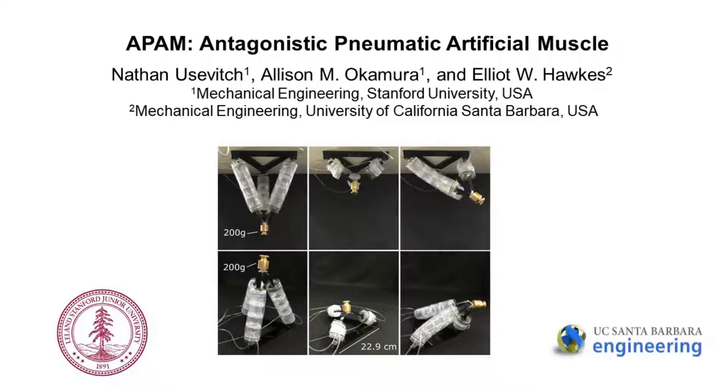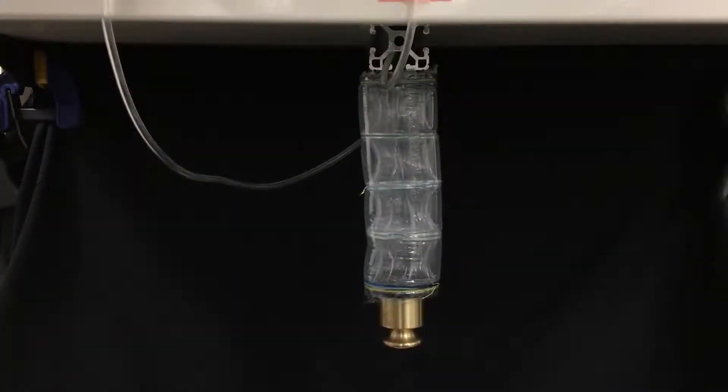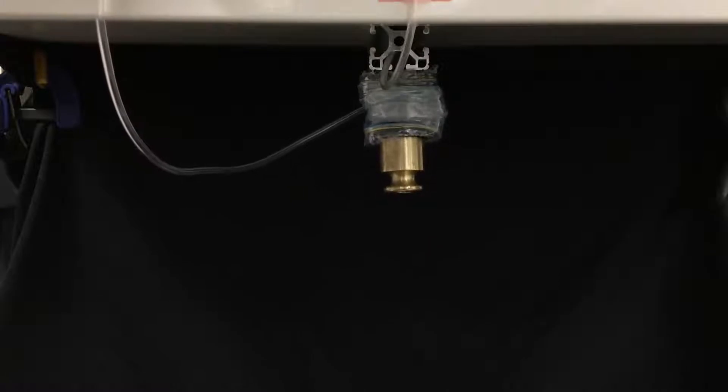We introduce the Antagonistic Pneumatic Artificial Muscle, or APAM. This actuator has a high extension ratio, can apply both pushing and pulling forces, and is capable of independent control of length and stiffness.